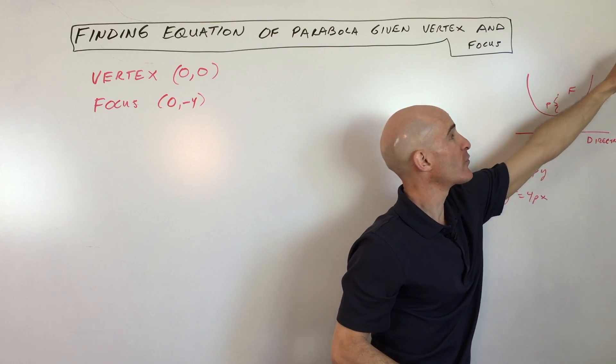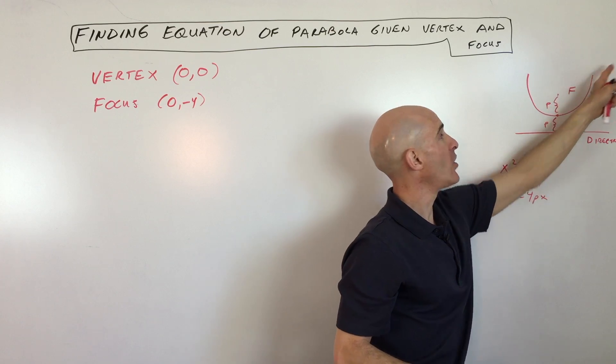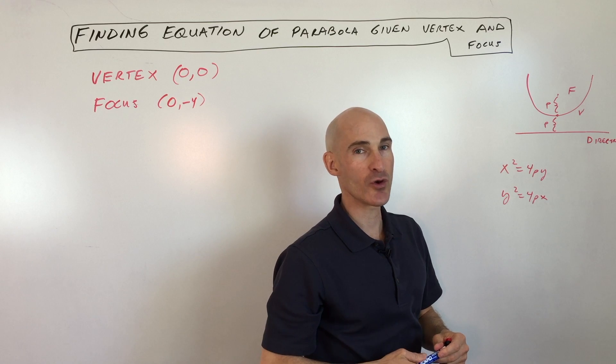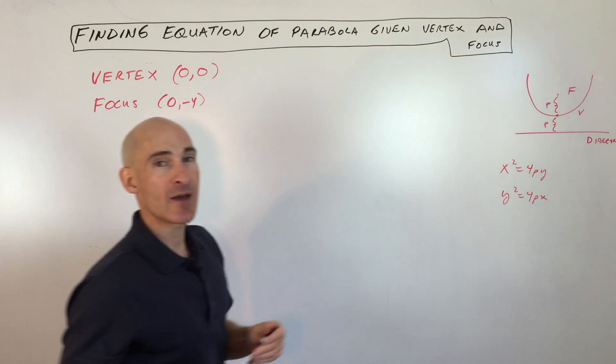So as you go further and further out on the parabola, the distance to the focus will get longer but so will the distance to the directrix, and those two distances will be congruent. So let's take a look at this example and I'll show you what I mean.